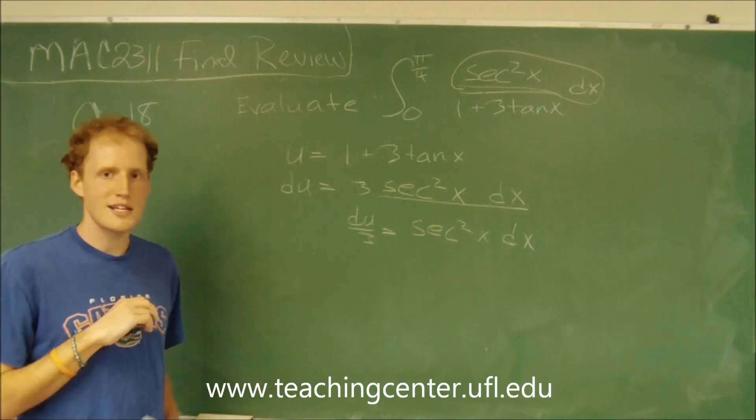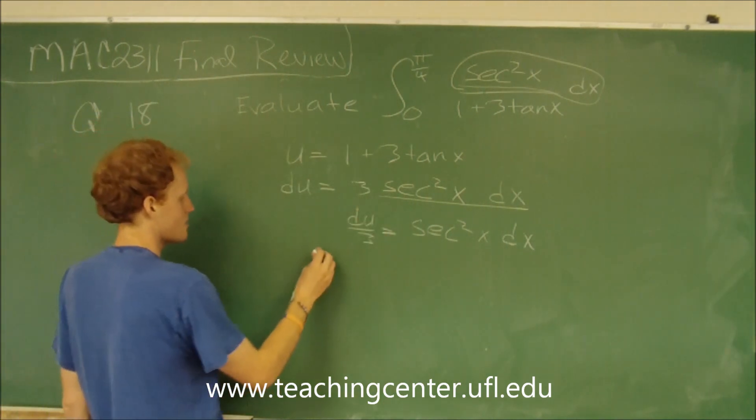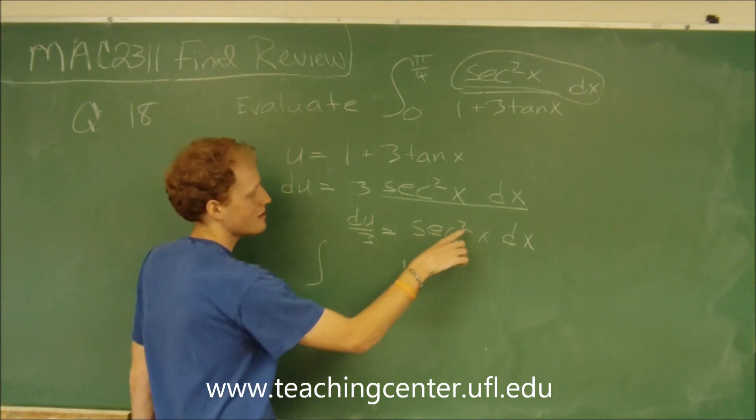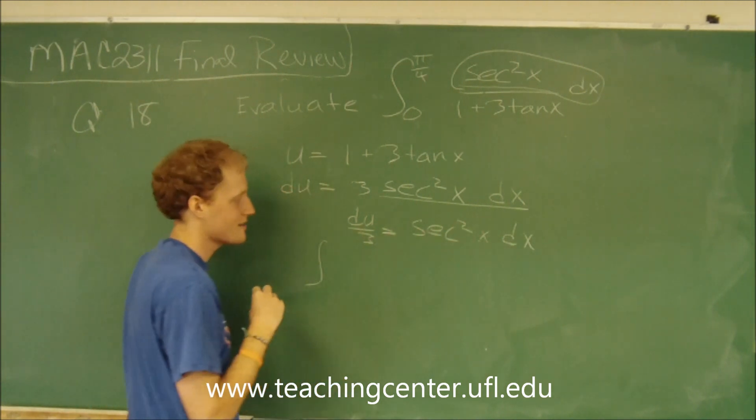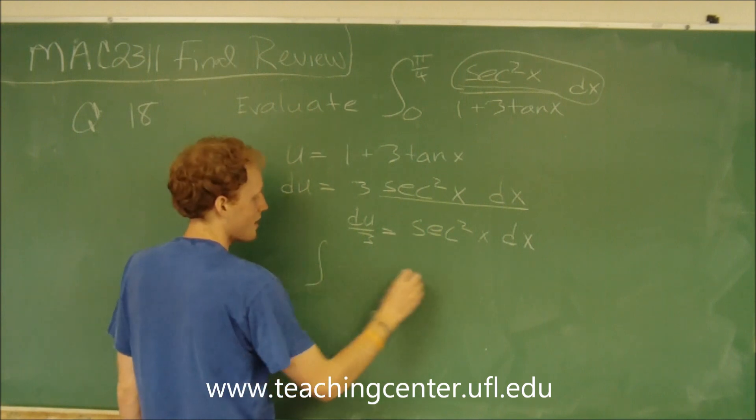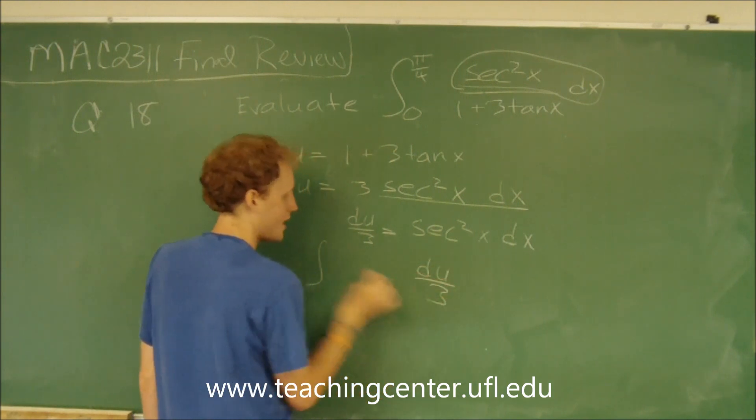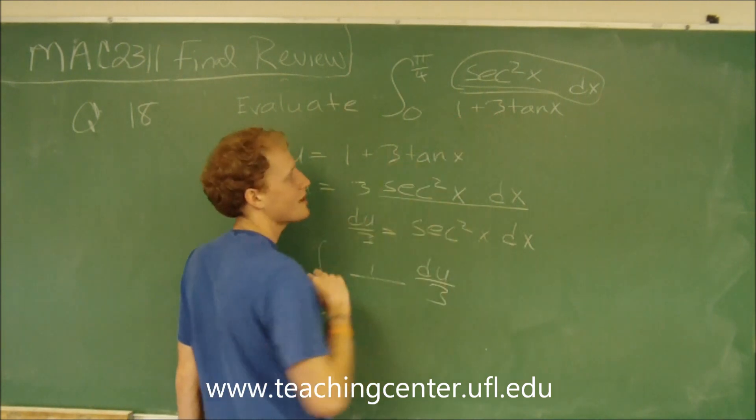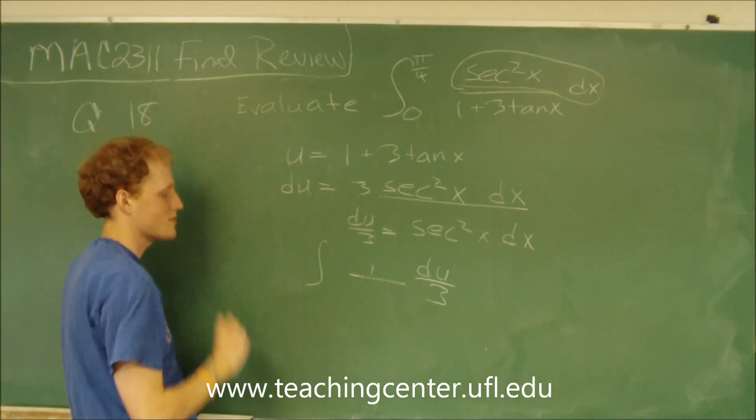So now let's replace everything. So it's going to be the integral. Secant squared of x dx is going to be du over 3. And then the denominator is 1 plus 3 tangent x. That was u.